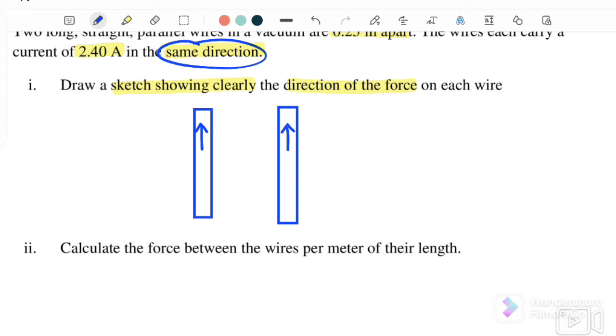Since they are flowing in the same direction, meaning that the directions of the force is actually attracted to each other. F1 will act to the right and F2 will act to the left. So both of them are attracted to each other.